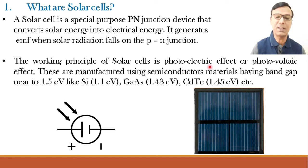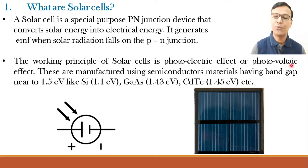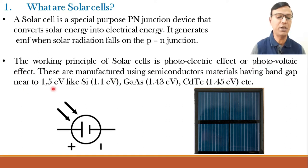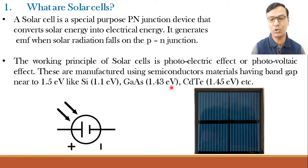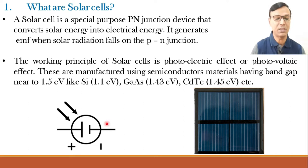The working principle of solar cells is the photoelectric effect or photovoltaic effect. Generation of electricity when photons or light fall on it is known as the photoelectric effect. Generation of voltage when photons or light fall on it is called the photovoltaic effect. These are manufactured using semiconductor materials having a band gap near 1.5 eV, like silicon (1.1 eV), gallium arsenide (1.43 eV), and cadmium telluride (1.45 eV).